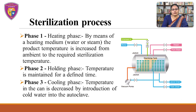Coming to the process of sterilization — this process is used in canned products and is divided into 3 phases. Phase 1 is heating, done by means of a heating medium either water or steam, in which the product temperature is increased from ambient to the required sterilization temperature. This temperature is maintained for a defined time in Phase 2, which is the holding phase. In Phase 3, the cooling phase, the temperature in the can is decreased by introduction of cold water into the autoclave.